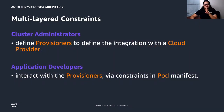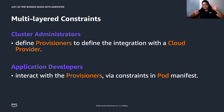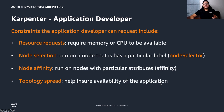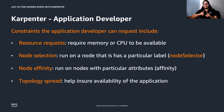Think of two personas: an administrator and an application developer. The cluster administrator installs and updates Karpenter and defines Provisioners to segment the infrastructure space as needed — based on purchase options, capacity type, instance type, availability zones, etc. The application developer writes the pod manifest, which Karpenter evaluates. As long as the requests are not outside the Provisioner's constraints, Karpenter will look for the best match. If the constraints are such that a match is not possible, the pod will remain unscheduled.